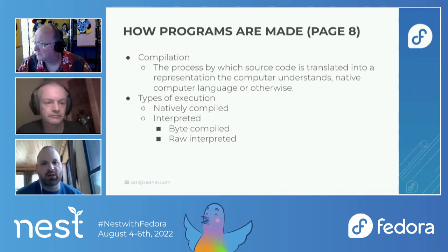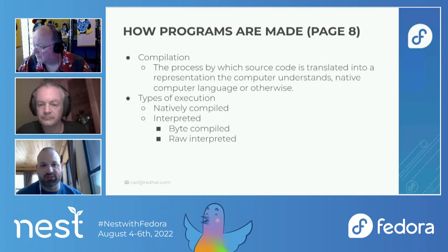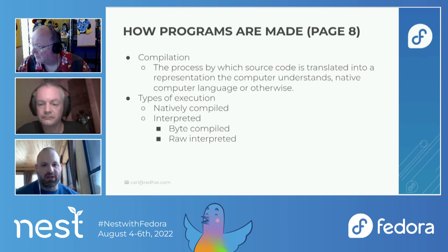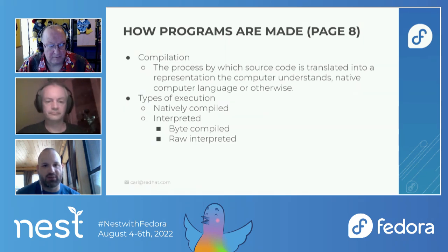How programs are made: there's a process called compilation, where we take source code and translate it into a representation the computer understands — either a native computer language or otherwise. There are different types of execution for programs: natively compiled and interpreted, which is divided into byte compiled and raw interpreted.